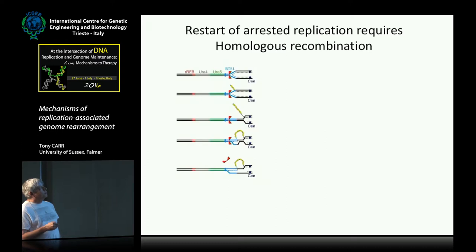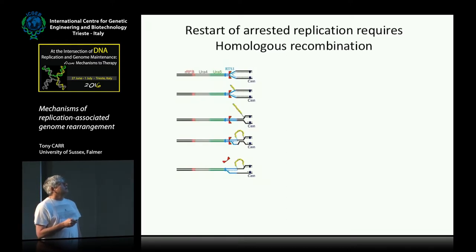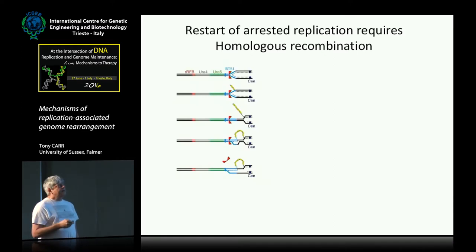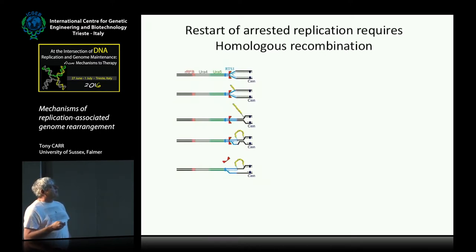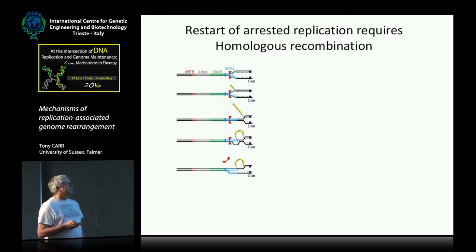The important part of this model — and the surprise to us at the time — was that we get no evidence of a double-strand break. Replication forks arrest in various different ways and get restarted in very different ways, and I don't think the cell will make a double-strand break unless it has to. So this probably represents one way in which cells can restart replication from a collapsed replication fork.